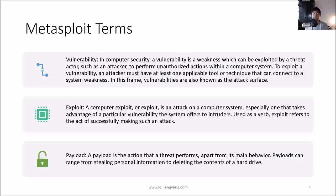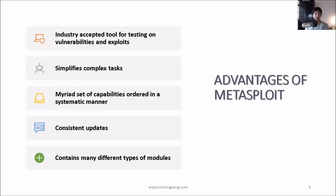Number two is exploit. An exploit is what happens when we're able to bypass the security mechanism inside a particular service, software, or operating system. This allows us to take control of the system or services running inside it. Number three is payload — what do we do after we get into the system? Payloads in Metasploit come mainly as shells to give us control so we can run different commands.